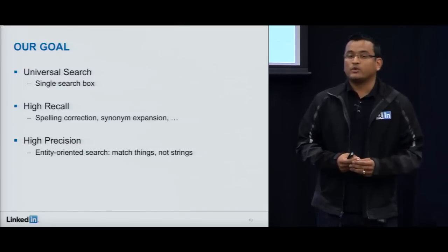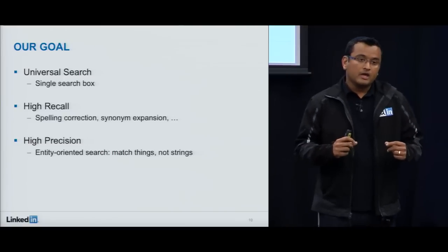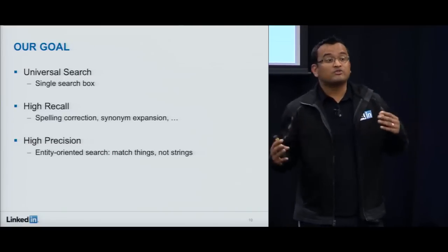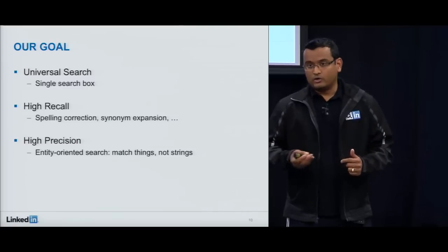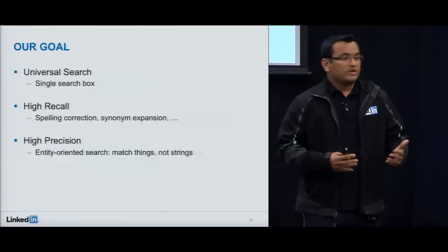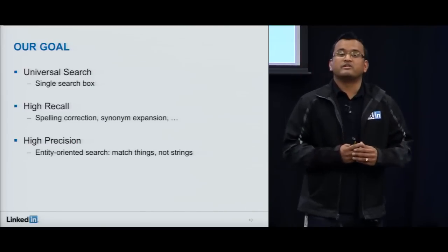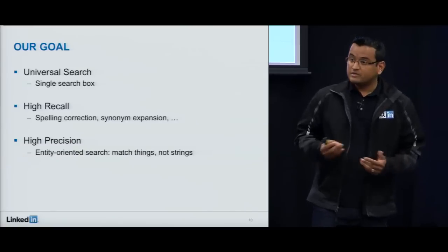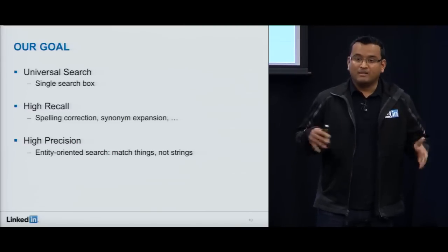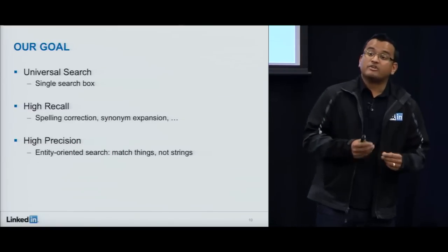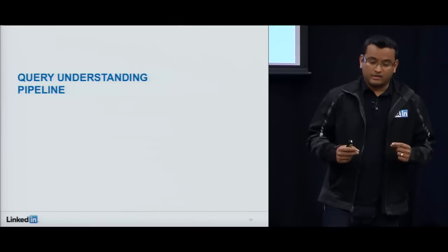We want a single search box where you enter your query without having to fiddle with lots of controls to specify what you're looking for. We want our results to have high recall — you should be able to enter your query without worrying about spellings or synonyms, and if what you're looking for is in the index, we retrieve it. We also want high precision through what we call entity-oriented search: instead of blindly matching a query as a bag of words, we first understand what every word means — is it an entity we already know about — so we can do precise matching and return accurate results.